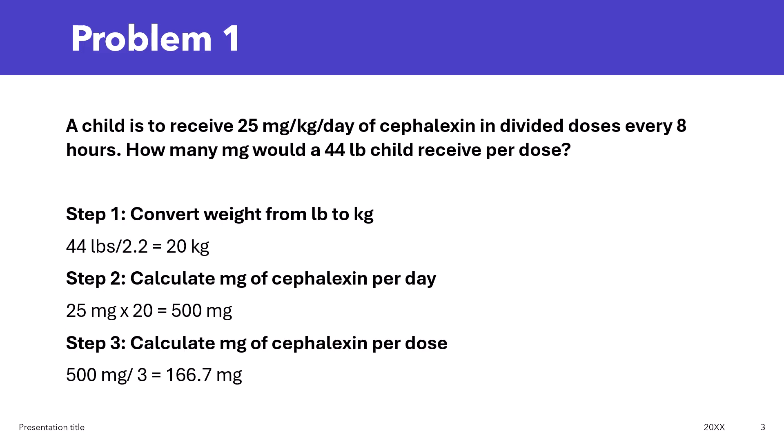The first step to solve this problem is to convert the weight from pounds to kilograms. To convert a weight from pounds to kilograms, you're going to divide the weight by 2.2. So, 44 divided by 2.2 — that's 20 kilograms. Now, you can calculate how many mg of cefalexin needed per day because the dose is 25 mg per kg per day and you now have the weight in kg.